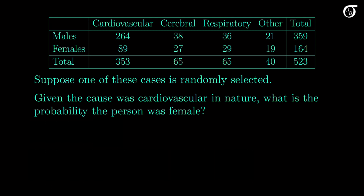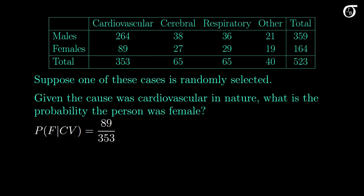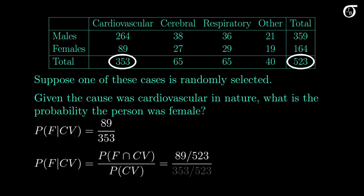Given the cause was cardiovascular in nature, what is the probability the person was female? If we know the cause was cardiovascular, that reduces the sample space down to just the 353 cardiovascular cases. Given the cause was cardiovascular, the probability the person was female is 89 out of those 353 equally likely cases. Using the conditional probability formula, this equals the probability of female and cardiovascular — 89 over 523 — divided by the probability of cardiovascular — 353 over 523 — and the 523s cancel, giving the same result.